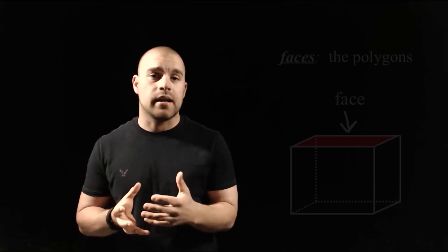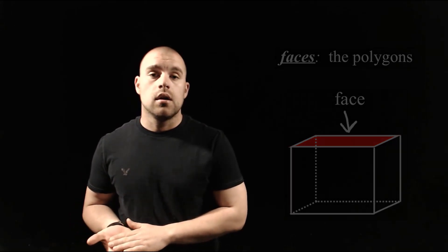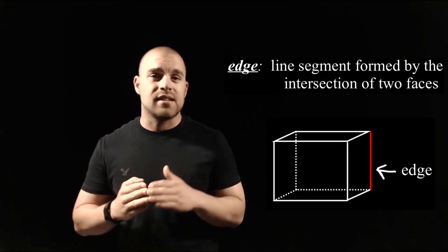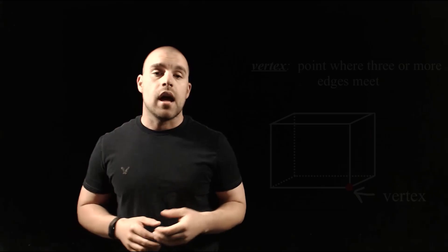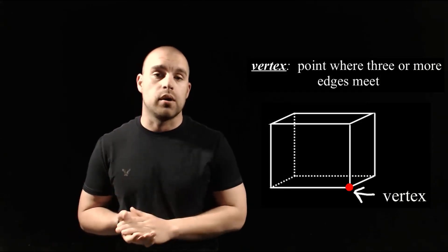As far as those polygons go that are around the outside of our figure, we call those faces of our polyhedra. Where we've got two faces coming together, it makes a line segment, and we call that an edge. And then if we have three or more edges coming together at a point, those are our vertex points.